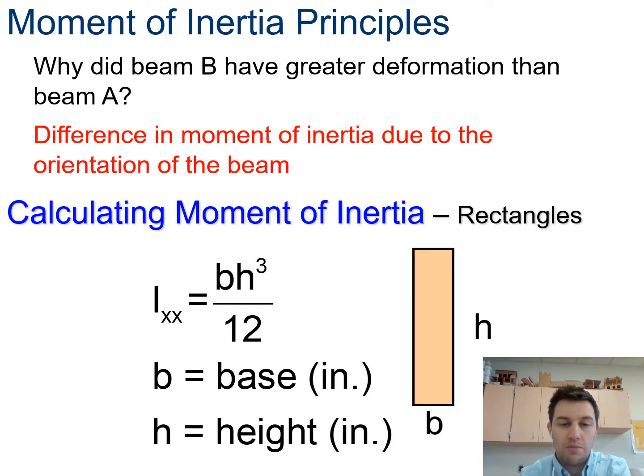Where the base is always the horizontal portion and the height is always the vertical portion. So no matter how you lay this out, base will always be along the bottom, height will be along the top. And the other thing to remember is you're only cubing the height. So you're taking base times the height cubed and then divided by 12.